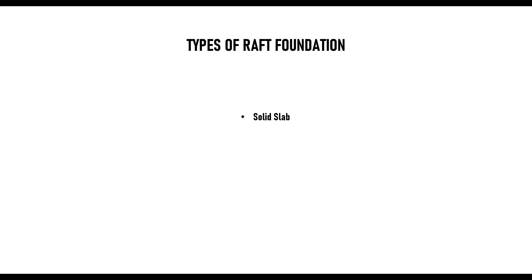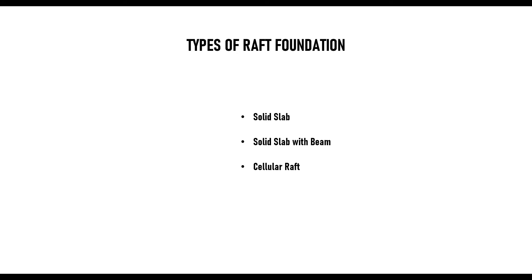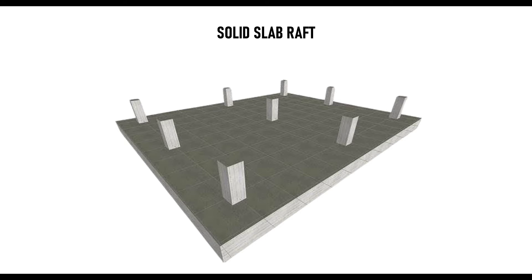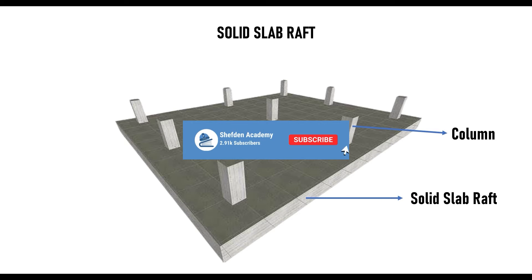The principle of the solid slab raft is that we convert the load of the superstructure, subjecting it to a solid slab — a slab not supported or assisted with any beam, just a normal slab — and that slab spreads the load to the ground. We also have the solid slab with beams, which simply adds beams to the system. Then we have the cellular raft. Let us now look at each of them one by one and discuss their uses and applications.